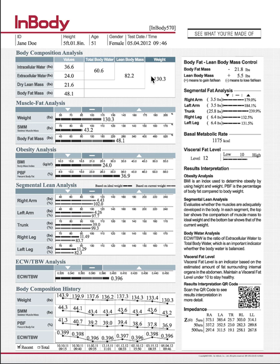When you look at the top block, it basically breaks down your whole body weight in the different areas. So this is Jane Doe — she's 130 pounds. 48.1 pounds of her weight is body fat. Her lean body mass is 82.2. Your lean body mass is composed of total body water and dry lean mass. Dry lean mass is essentially what you would weigh if you wrung all the water out of your body, so it's usually a pretty low number.